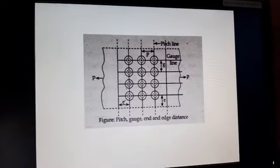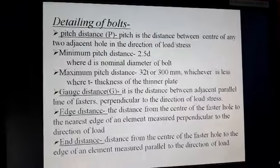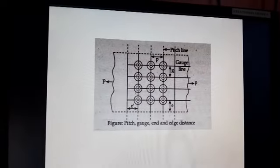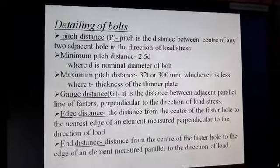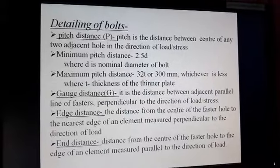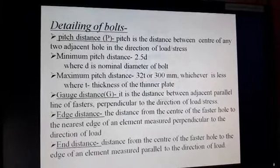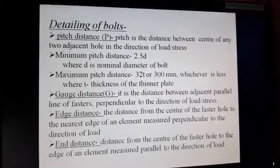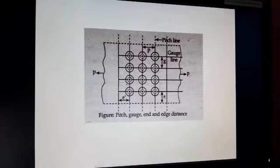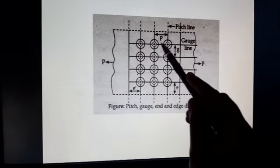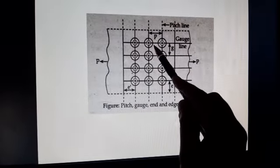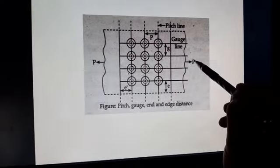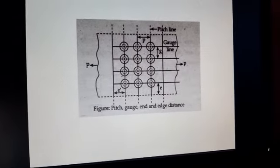This figure shows the details of bolt. Now in this diagram we will see what the pitch details of bolt are. The first term is pitch distance. Pitch distance means it is the distance between the center of any two adjacent holes in the direction of load. Here you can see pitch distance is center to center of any two adjacent holes, parallel to the load — that is P, which is parallel.